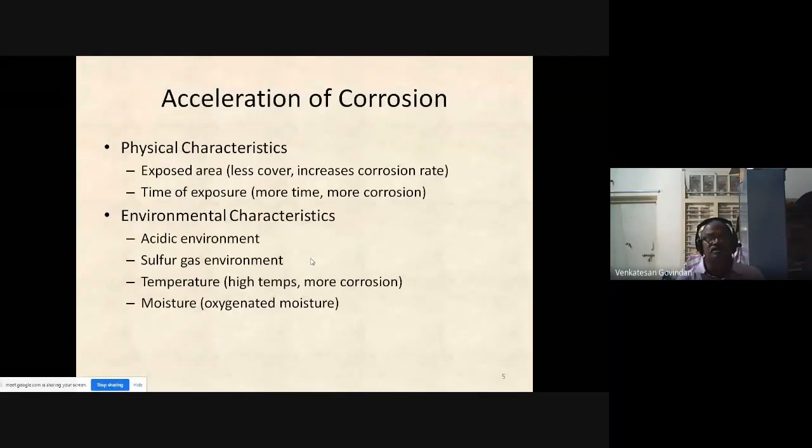Acceleration of corrosion depends on physical characteristics like exposed area, cover depth, corrosion rate, and time of exposure. Normal characteristics include whether the environment is acidic in nature. At pH 5 to 6.5, more corrosion takes place, especially in sulfur gas environments or marine conditions.